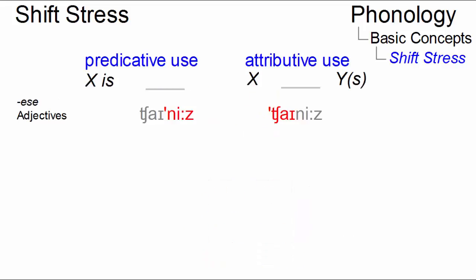Here are several examples. Adjectives ending in -ese: she is Chinese versus some Chinese girls.